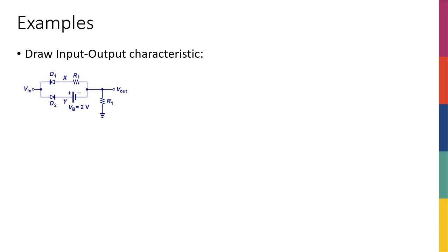Let's solve another example with two diodes — this would be our last example in this series. We have two diodes in the circuit, a battery of two volts, and two equal resistors R1. We want to find the input-output characteristics, so let me plot this here.